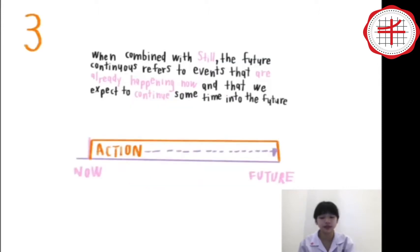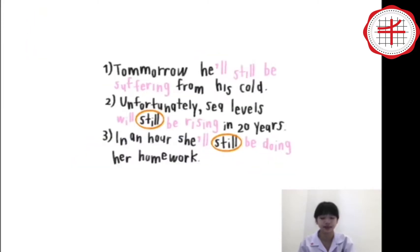Third, when combined with still, the Future Continuous refers to events that are already happening now and that we expect to continue sometime into the future. For example, tomorrow he will still be suffering from his cold. Unfortunately, the sea level will still be rising in 20 years. In an hour, she will still be doing her homework.